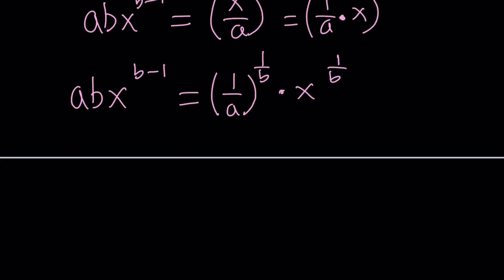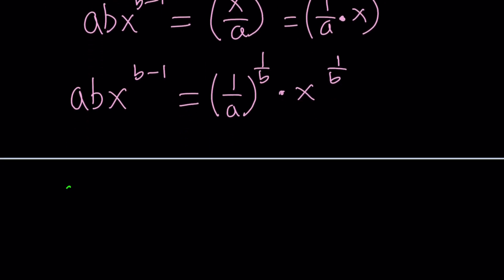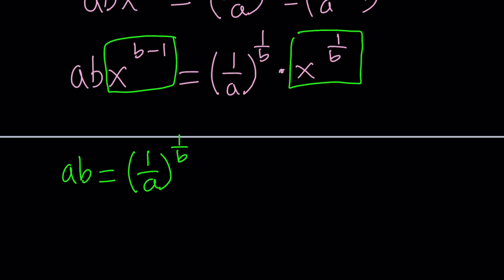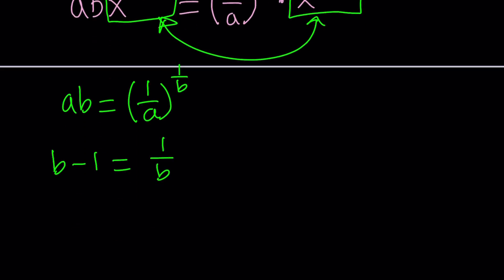From here, we can safely say that ab is equal to 1 over a to the power 1 over b. That's not the best part. This is the best part. x to the power b minus 1 should equal x to the power 1 over b. These two things should be equal, which means the exponents are equal, which means b minus 1 equals 1 over b. This is really the best part. You'll see in a little bit why it's really cool.